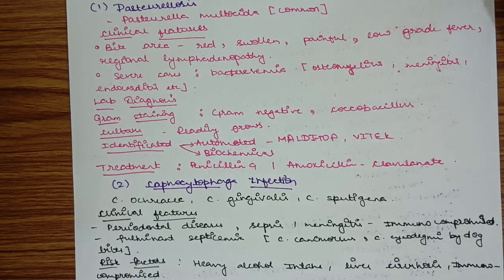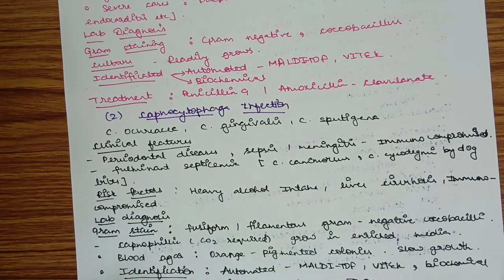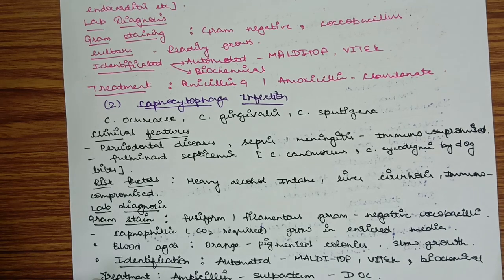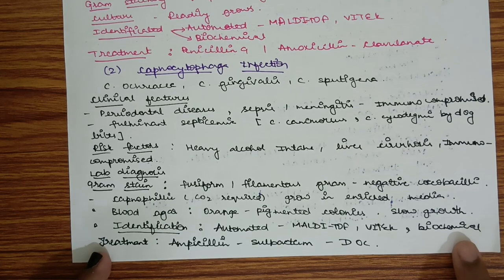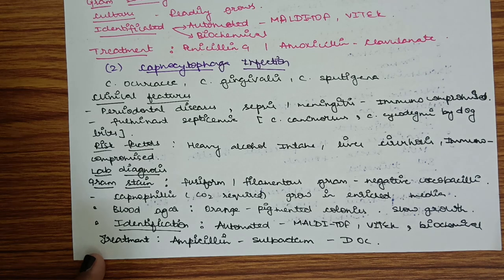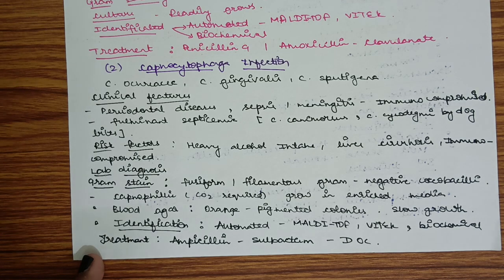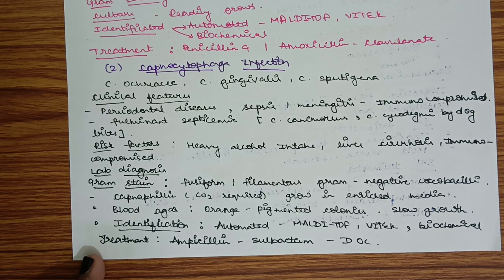Capnocytophaga infection is caused by Capnocytophaga canimorsus, gingivalis, and sputigena. Clinical features include periodontal disease, sepsis, and meningitis in immunocompromised individuals. Fulminant septicemia can be seen in dog bites. Risk factors include heavy alcohol intake, liver cirrhosis, and immunocompromised individuals. Lab diagnosis by gram staining shows fusiform filamentous gram negative coccobacilli. It is capnophilic, requiring carbon dioxide. On blood agar, orange pigmented colonies with slow growth. Identification by automated or biochemical methods. Treatment includes Ampicillin-sulbactam.